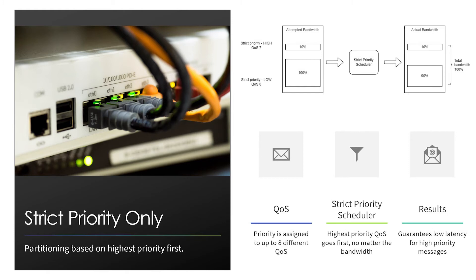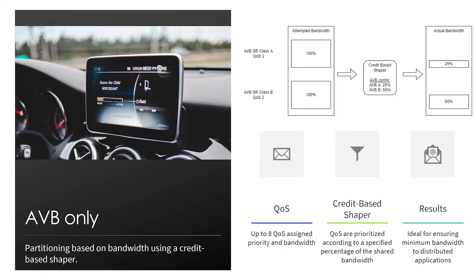When we add AVB, we test the credit shaping where we blast 100% bandwidth and see it being cut off to whatever bandwidth is allocated. We do that between multiple QoS queues that each have different amounts of bandwidth allocated, so we can see that both queues transmit their full bandwidth and neither is being starved.